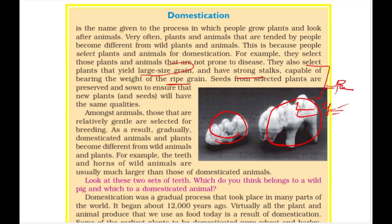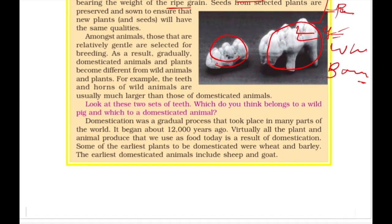Examples of domesticated grains are wheat, barley, and rice. Domestication as a process started around 12,000 years ago. Virtually all the plants and animals we have today were domesticated at that time — including wheat, barley, sheep, and goat.